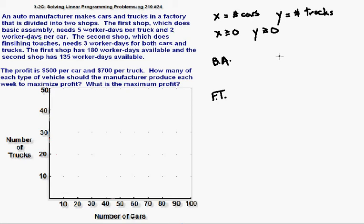The first shop has a maximum of 180 worker days available, so anything that we do less than that is a good thing. The second shop has a maximum of 135 worker days available, so anything less than that is also okay.